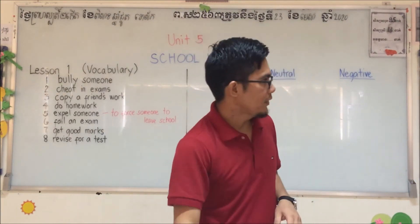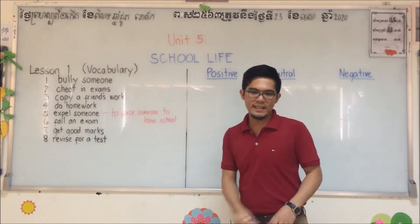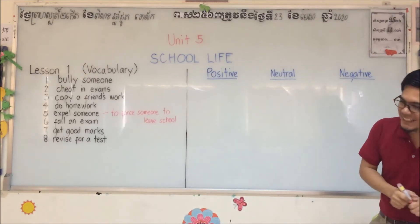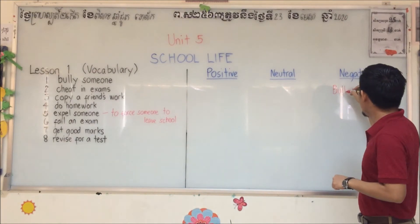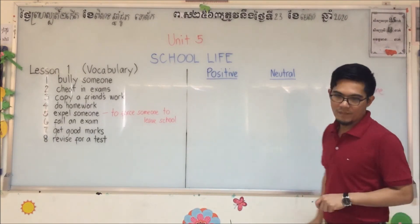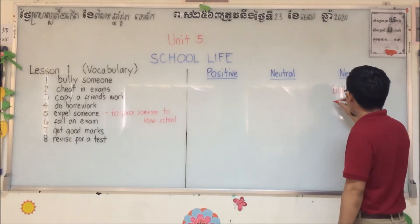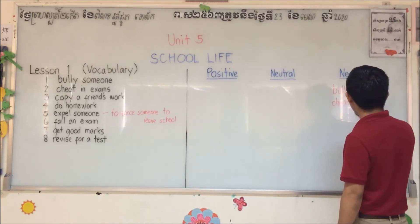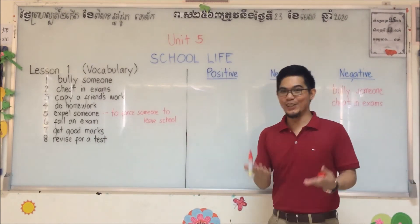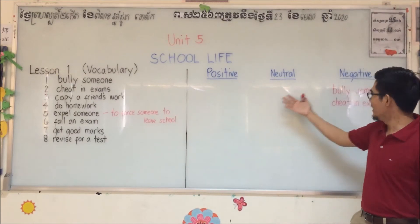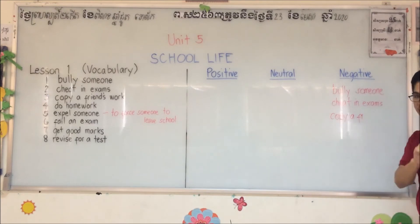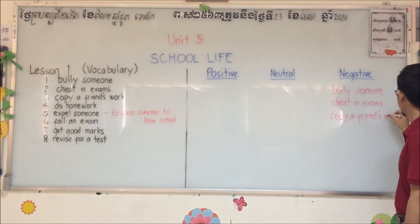Let's start. Number one: bully someone — that goes in the negative. Number two: cheat in exams — easy, that's negative. Number three: copy a friend's work — is copying good, neutral, or bad? It's negative.